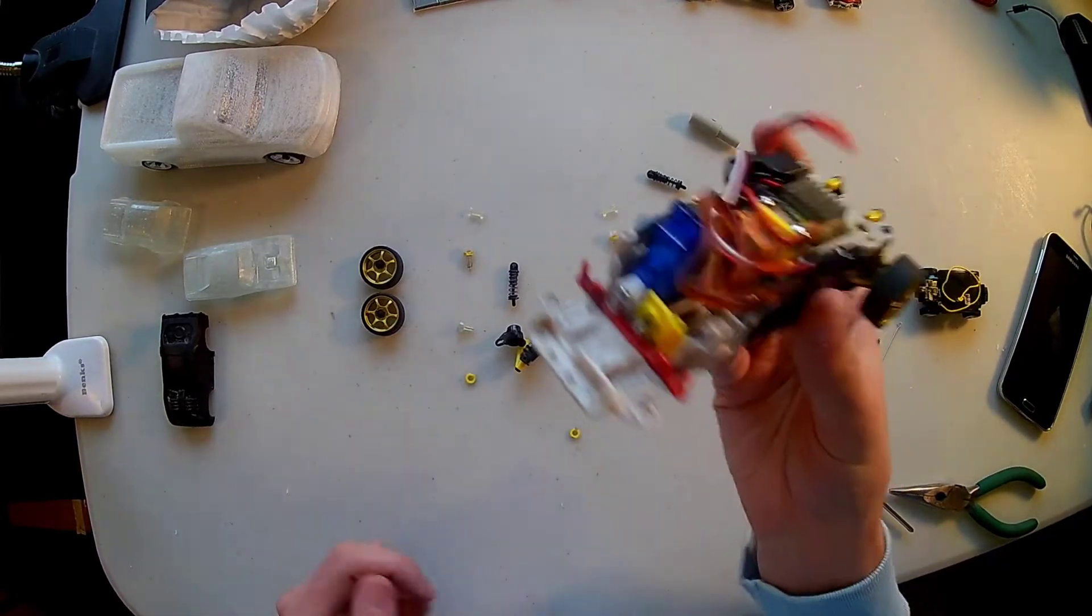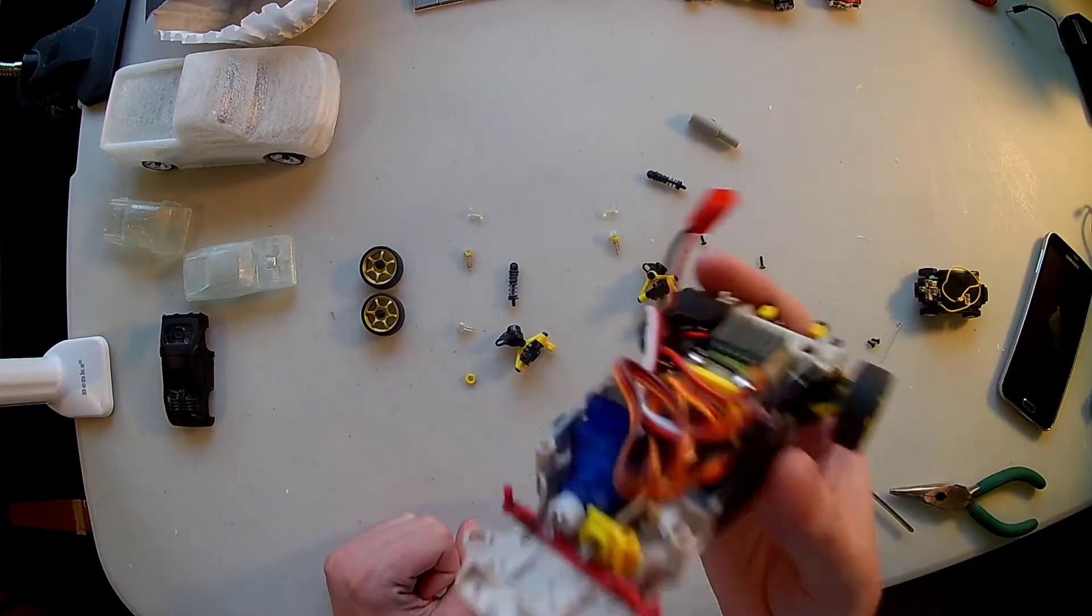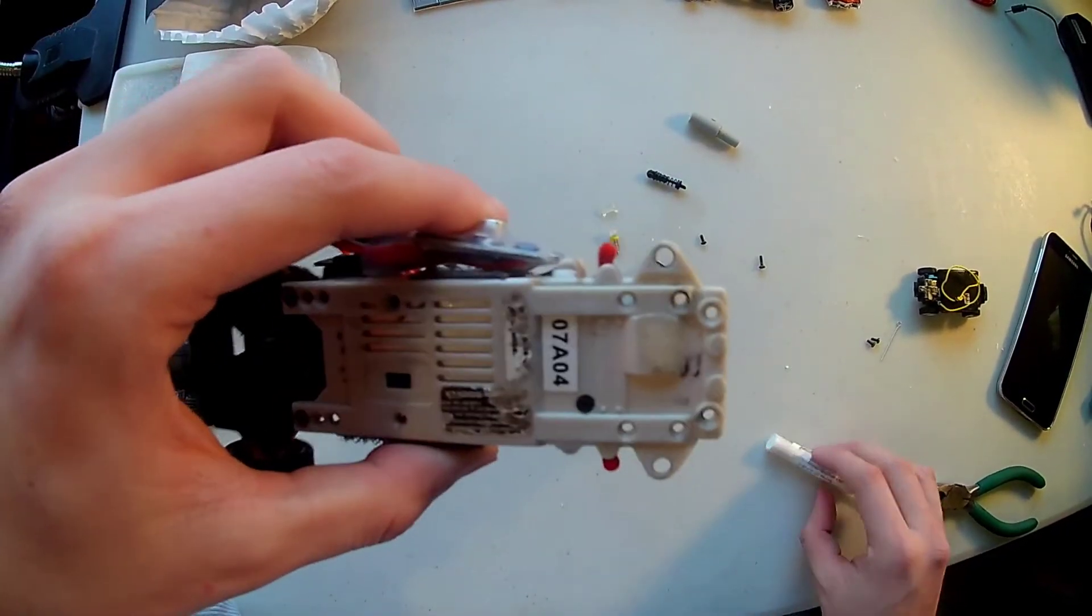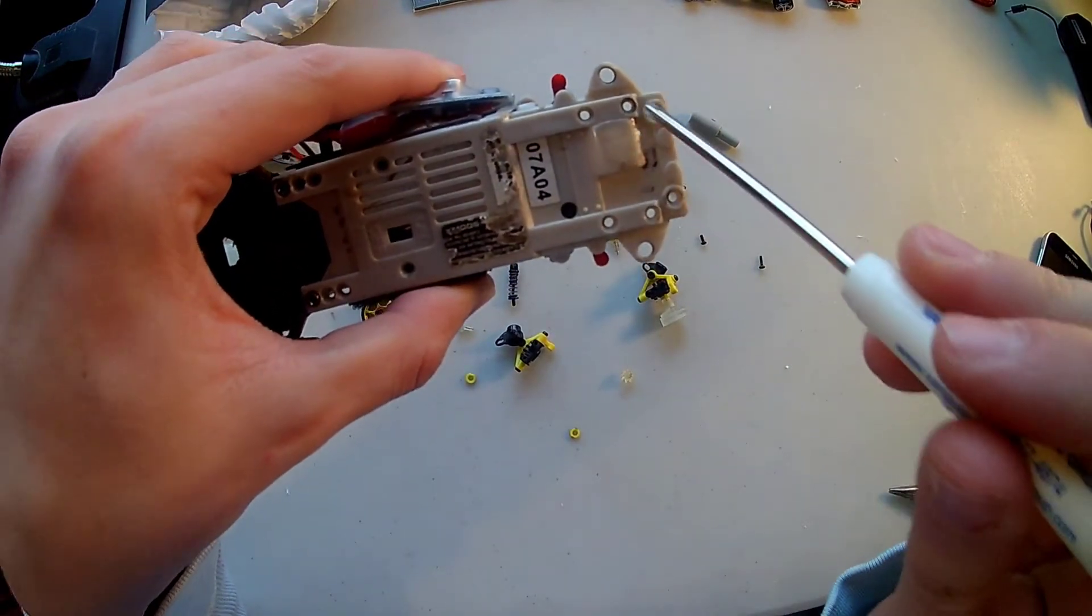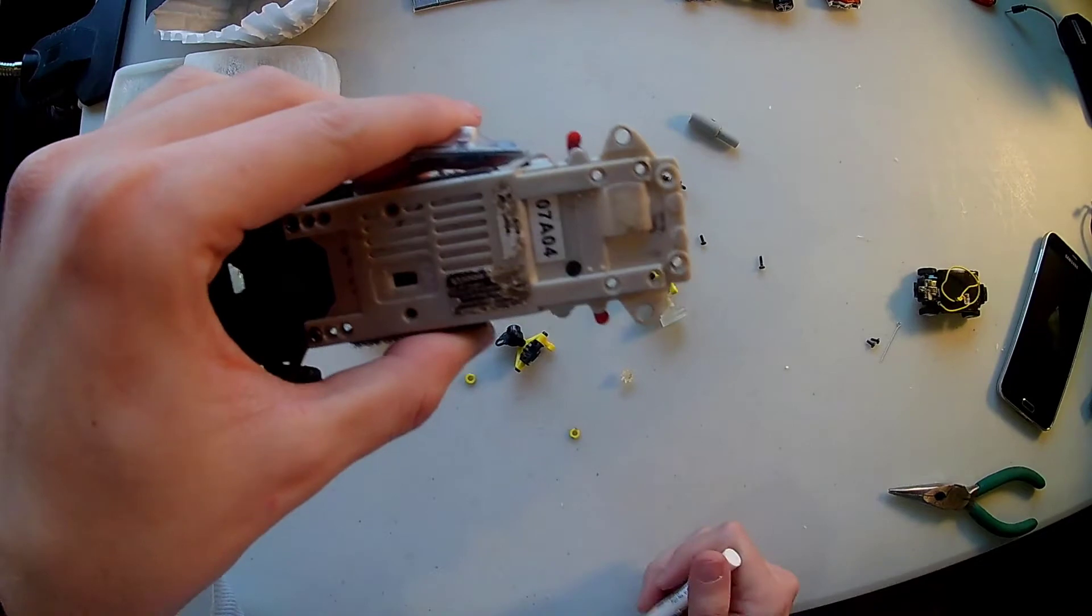What we're going to start off with is our Gen 1 XMod. Now, I did already start disassembling some of this. What you need to do is there's going to be four screws right here, and you're going to want to remove all of them.